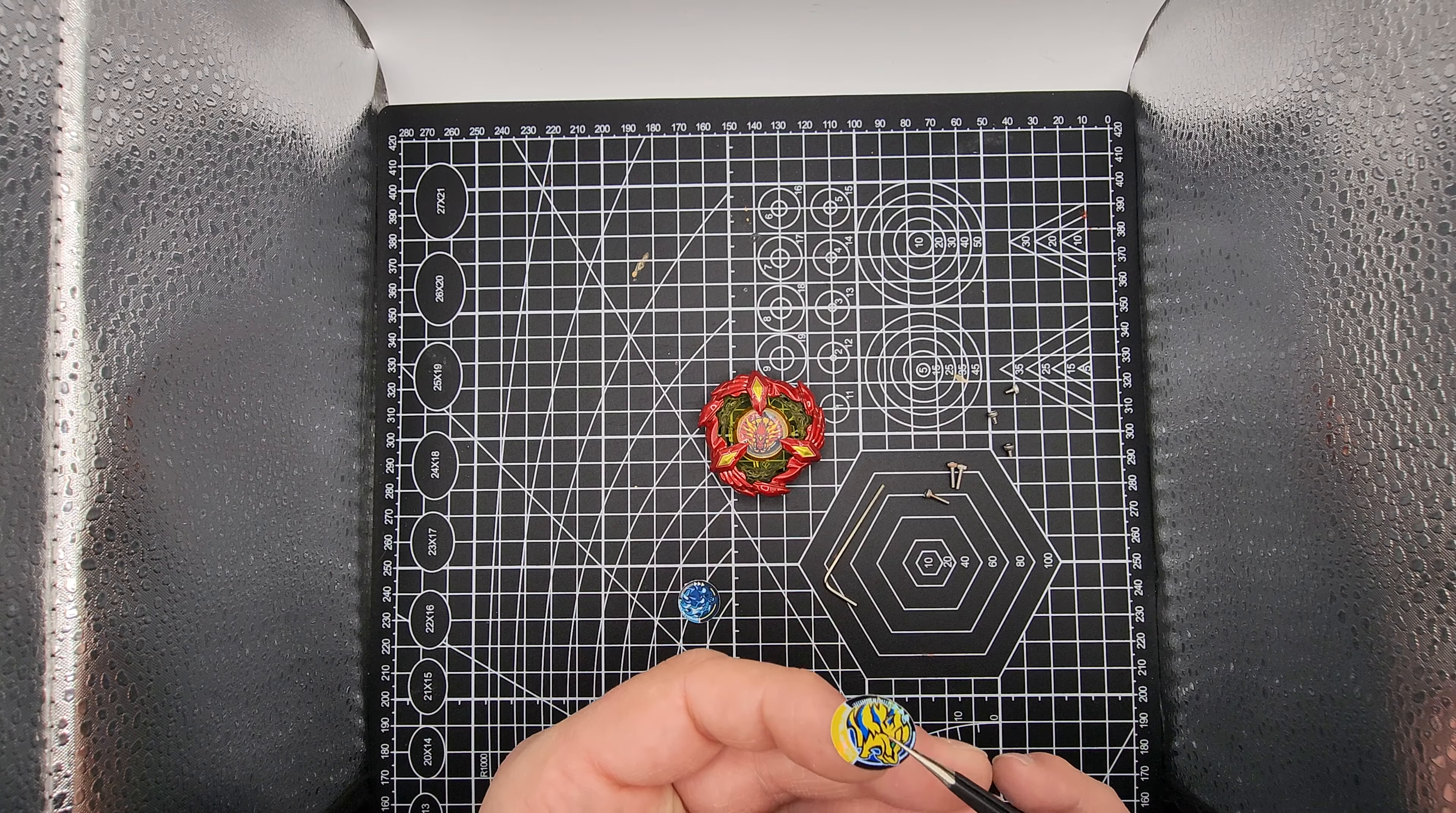Peel both of those off, grab your artwork in between, and we're going to line it up on here. Line it up and then firmly press down and now you got your new artwork with the correct way to mount it.